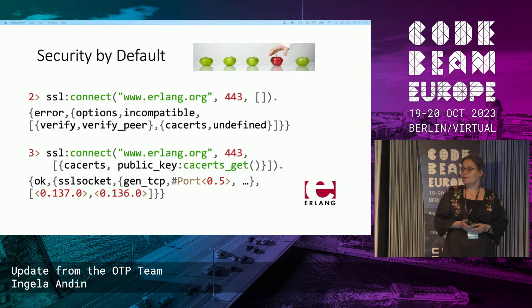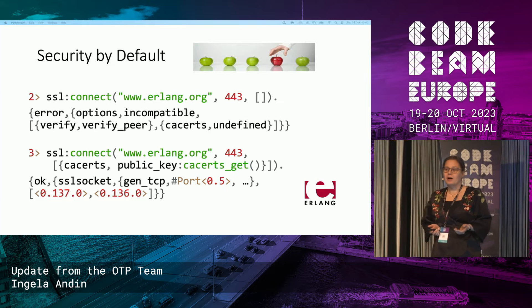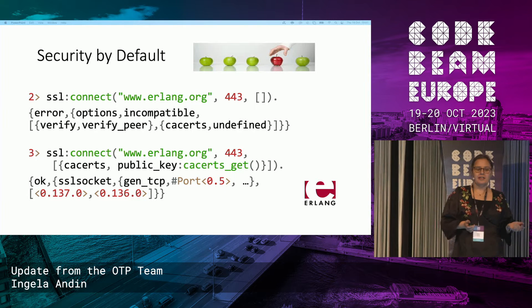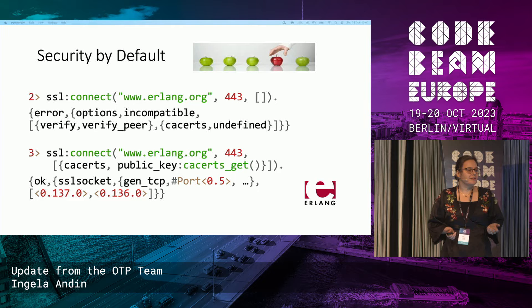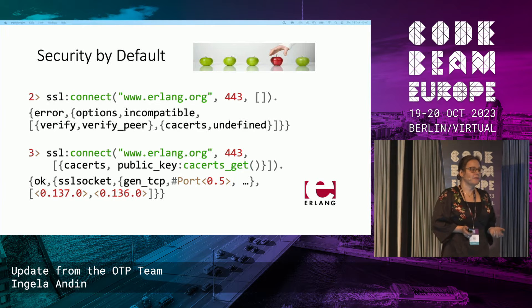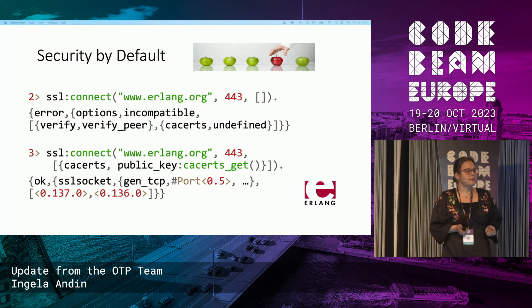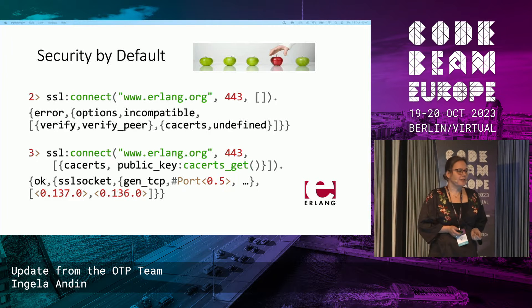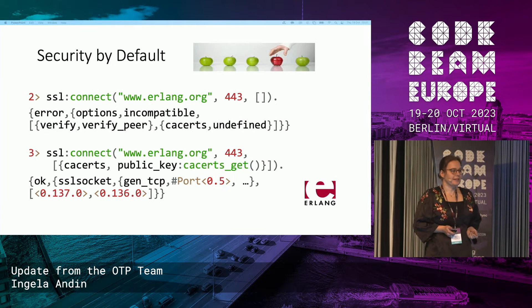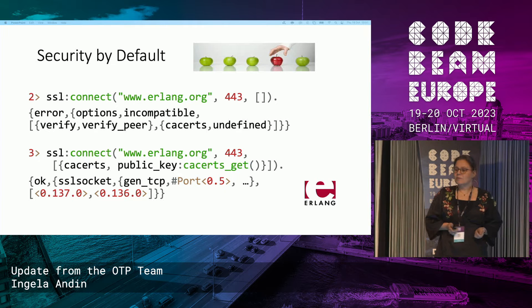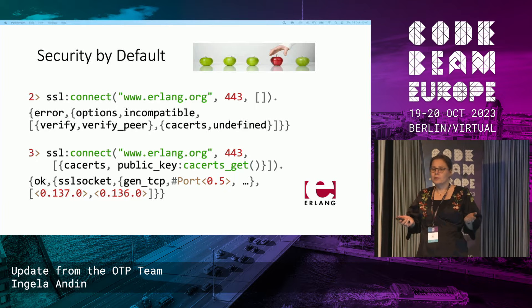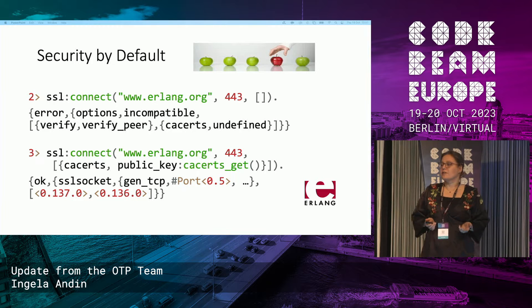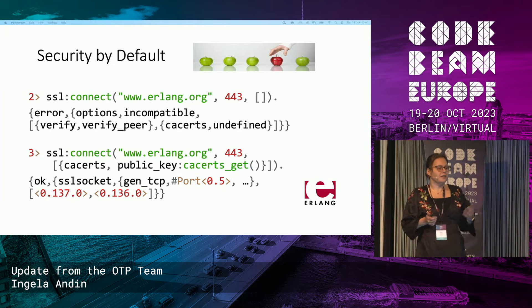When it comes to security, we are continuing our mission to remove and change configurations so that we have safe defaults. In OTP 26, you will no longer be able to get a TLS connection with an empty option list, because then we don't know which certificates to trust and we cannot verify the authenticity of the connection.